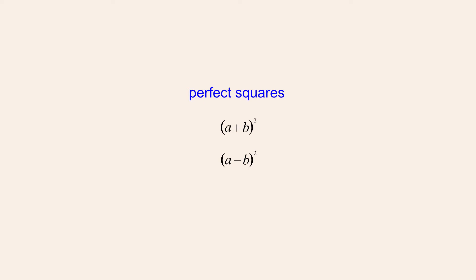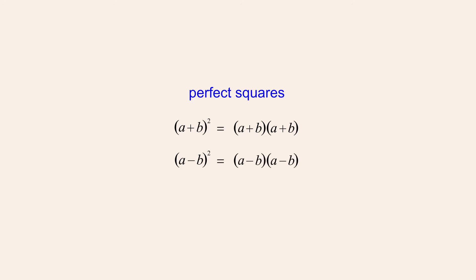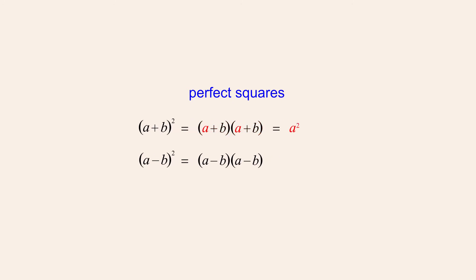However, there is another form that these perfect square quadratic expressions can take. This form can be produced by expanding the expressions — first writing each of them as the product of two binomials, a plus b times a plus b and a minus b times a minus b, and then multiplying each pair of binomials. Multiplying the first pair of binomials: a times a gives us a-squared, then a times b is ab, b times a is also ab, and b times b is b-squared. We can then combine the ab terms, giving us 2ab.